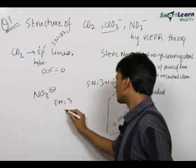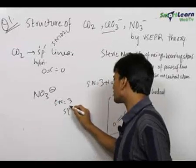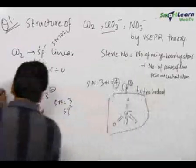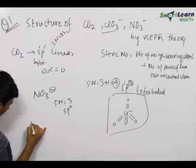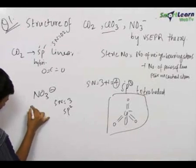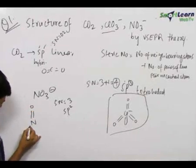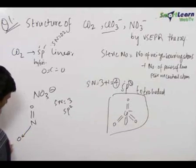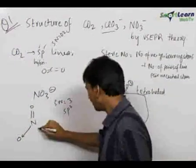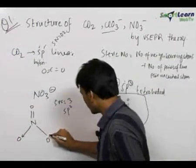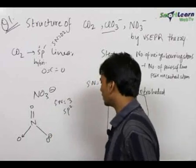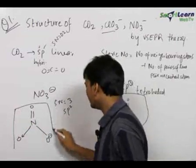The steric number is 3, which is equal to the number of neighboring atoms. Therefore, the hybridization becomes SP2. Therefore, the structure becomes trigonal planar with a nitrogen atom in the center, an oxygen double bond on one side, a coordinate bond with oxygen on another, and a single bond with oxygen on the third.